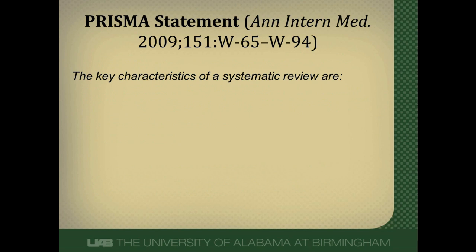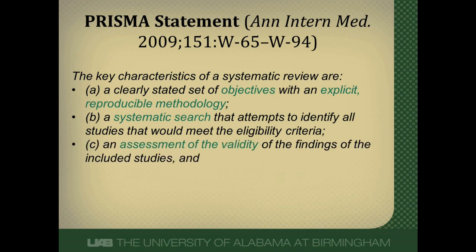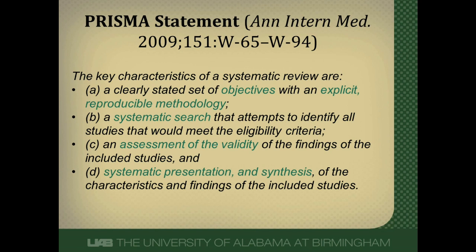The key characteristics of a systematic review are a clearly stated set of objectives with explicit and reproducible methodology. They do a very systematic search to identify all available information, whether published or unpublished. They assess the validity of each included study, so we know how good the studies are. And finally, they use a systematic method to present and synthesize the information.